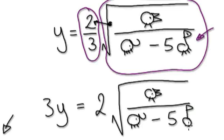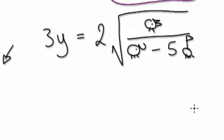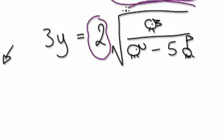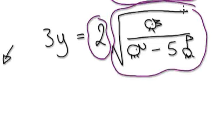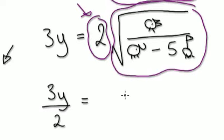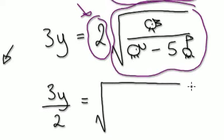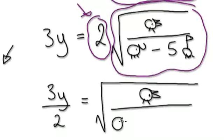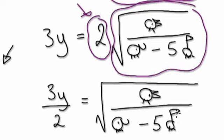So one bubble here multiplying this bubble here. Now kill off the two — divide both sides by two. So take the three y down over two, and on this side it would be root chicken over elephant, take away five giraffes.